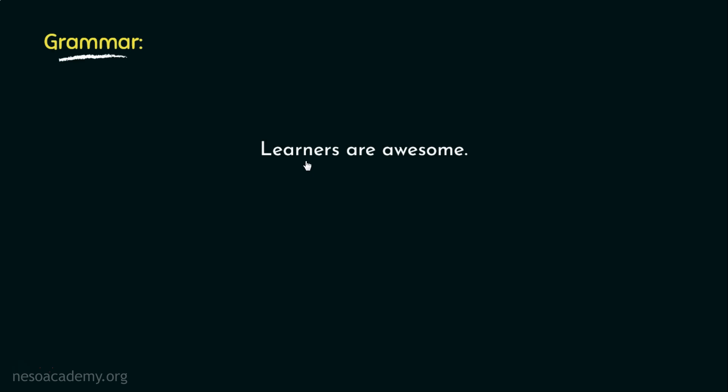Replacing the noun learners by another noun, say, Neso, the verb are by is, that is another verb, and the adjective awesome by good, which is another adjective, we get another grammatically correct English sentence, Neso is good. Well, I hope that's what you feel about us.